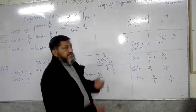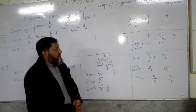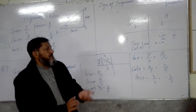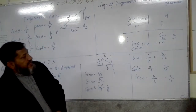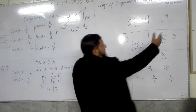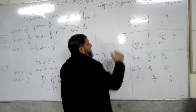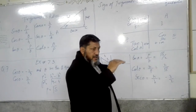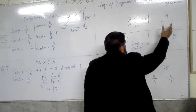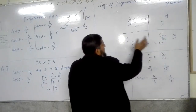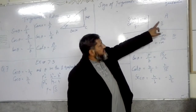To remember which functions are positive in each quadrant, we use the mnemonic technique ACTS. Written clockwise starting from the first quadrant: A, C, T, S — where A stands for All (first quadrant), C for Cosine (fourth quadrant), T for Tangent (third quadrant), and S for Sine (second quadrant). The positive functions in each quadrant follow this clockwise order.